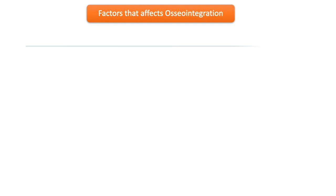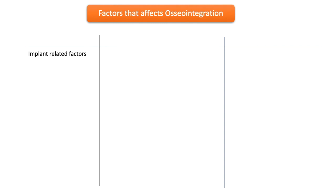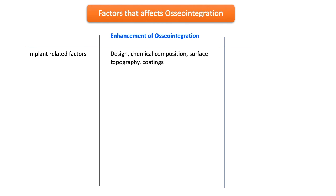Implant-related factors that enhance osseointegration include implant design — a press-fit implant is desirable — chemical composition, surface topography, and coatings. Various methods are used to alter surface topography, such as electropolishing, mechanical polishing, blasting, and additive processes like hydroxyapatite coating, titanium plasma-sprayed surfaces, and ion deposition.